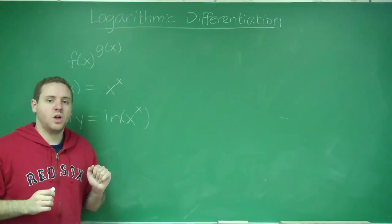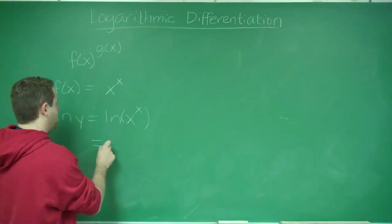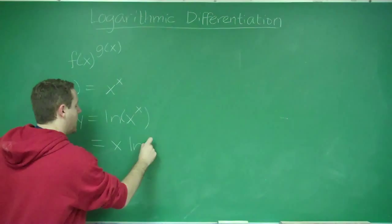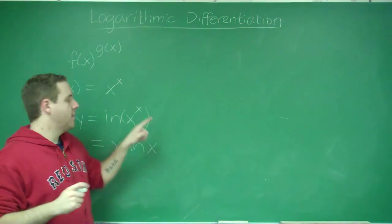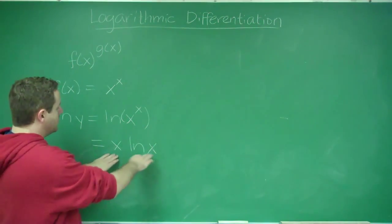Now, remember that using your logarithmic rules, ln of x to the x is the same thing as x ln x. Because if you take the ln of something to a power, that power can come in front. You see, by doing so, we've removed the problem.